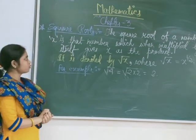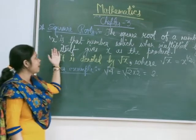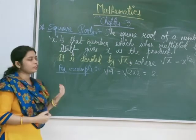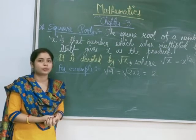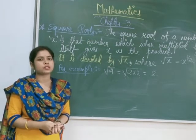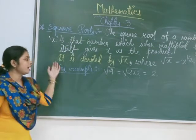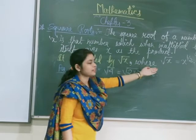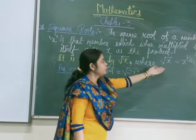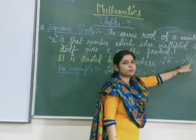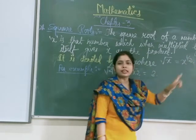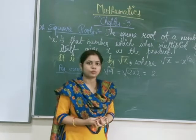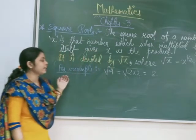So what is square root? The square root of a number is that number which when multiplied by itself gives the product. It is denoted by √x where x to the power 1/2 represents root x, and x to the power 2 represents square. So now we are going to give an example.